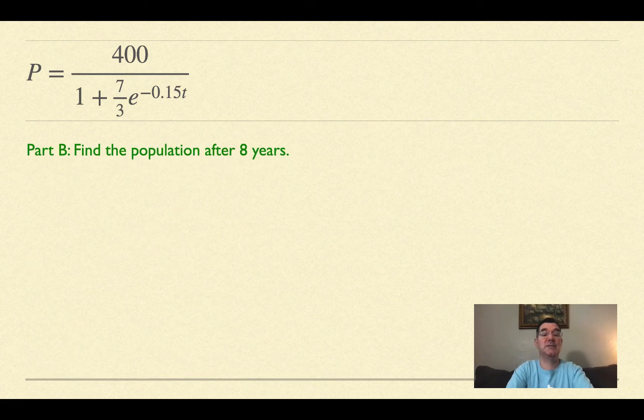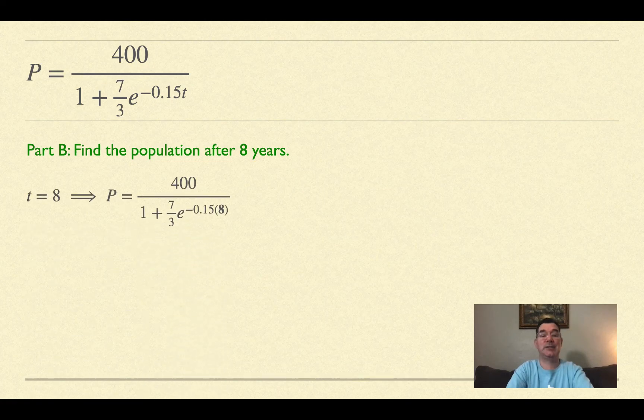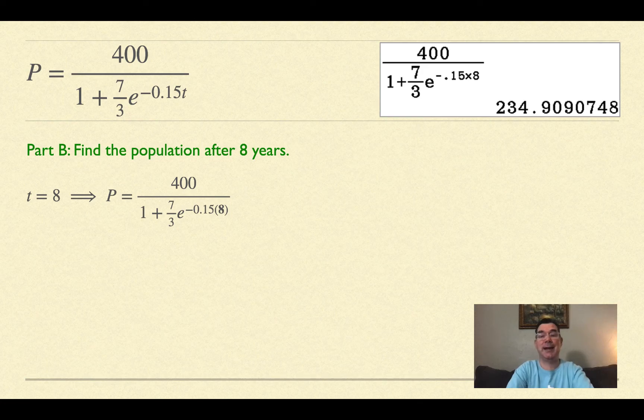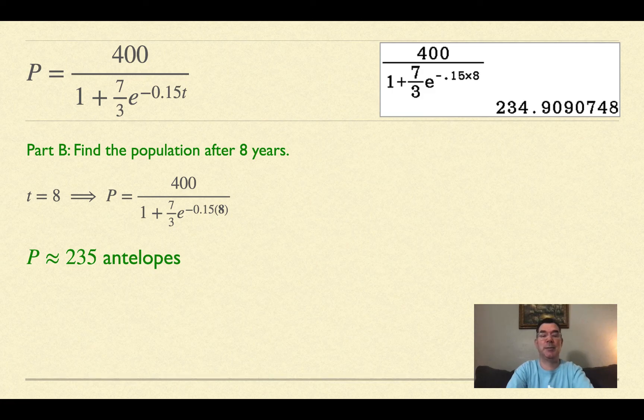Part B: find the population after 8 years. That means t = 8, so I replace t with 8 in my equation. Using a calculator, that's 234.909, or about 235 antelopes.